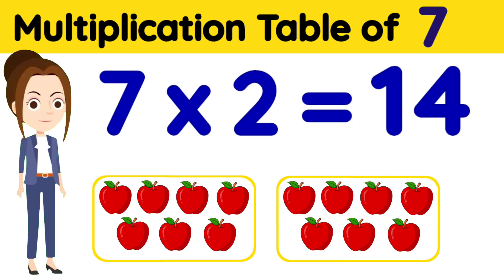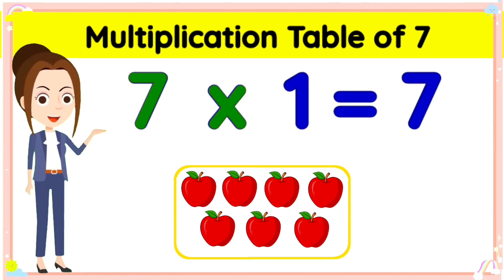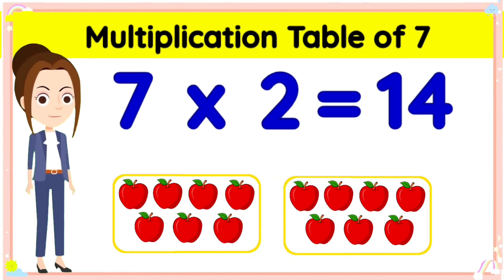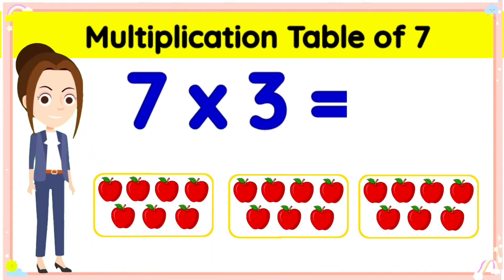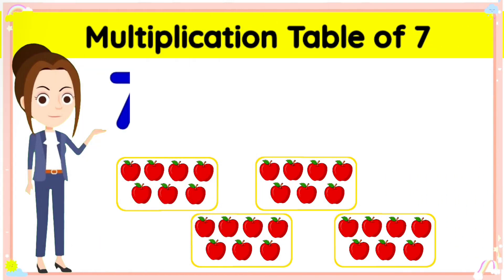Multiplication table of seven. Children, come let's read and learn the multiplication table of seven. Let's begin. Seven ones is seven. Seven twos are fourteen. Seven threes are twenty-one.